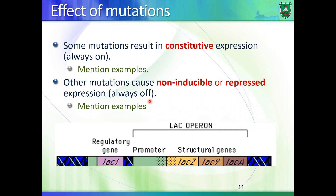Jacob and Monod received the Nobel Prize because they created a number of mutations — they induced mutations in different regions — and based on these mutations they were able to understand the lac operon and how it is regulated. Some of the mutations they studied can result in constitutive expression, meaning a mutation that results in the gene being always on — it is not regulated anymore and doesn't get turned off.